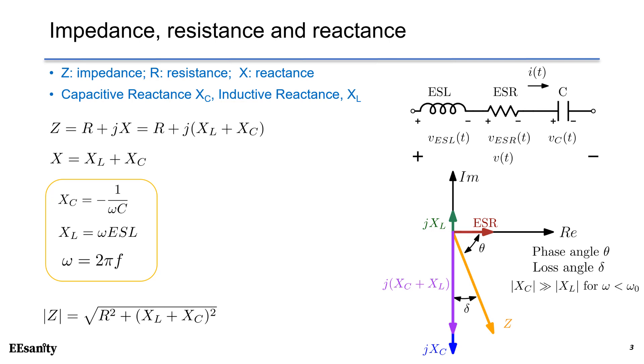This slide talks about the impedance, resistance, and reactance of a realistic capacitor. If we write the impedance in the frequency domain using S variable, we can obtain a complex number with real part and imaginary part. The equation is Z equals to R plus jX. R is a resistance that does not depend on the frequency. Reactance X is the imaginary part of the impedance.